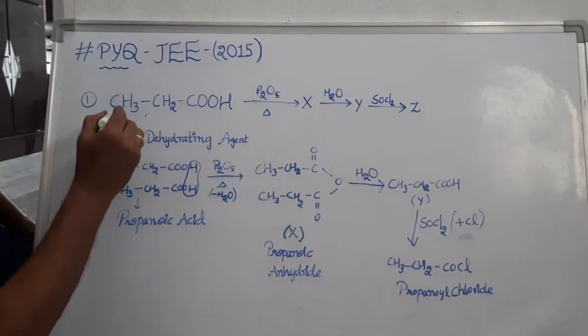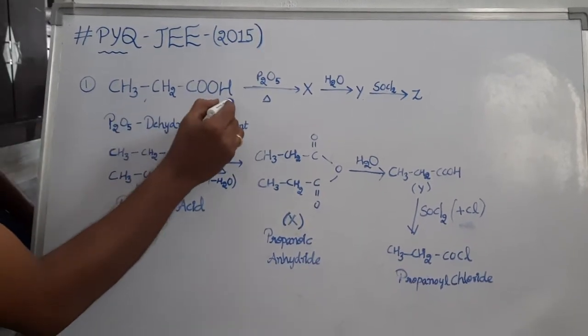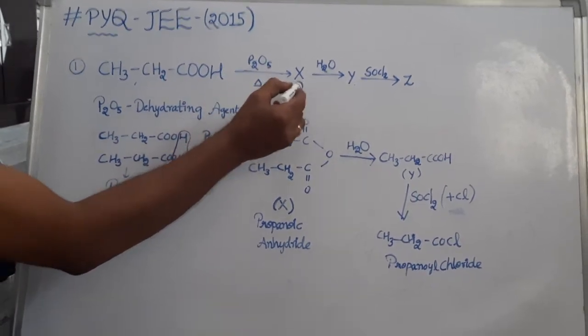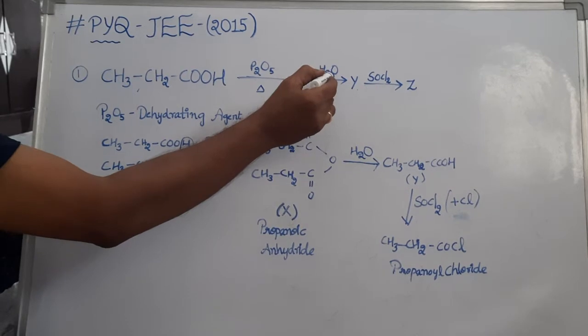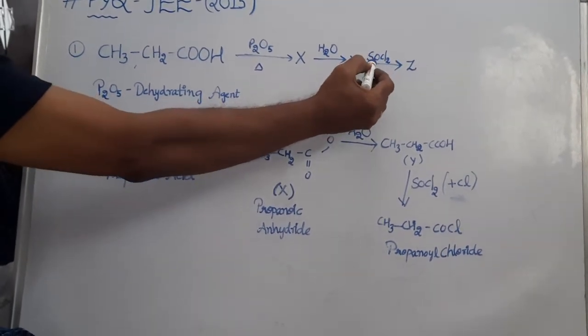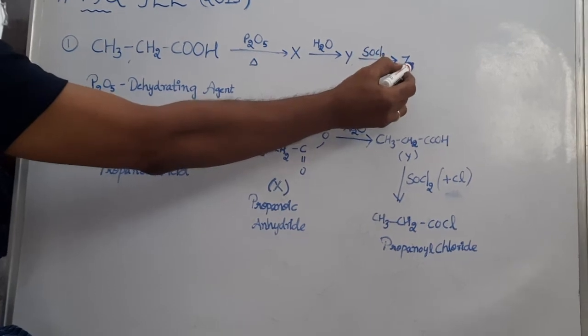Here the question is: propionic acid reacts with P2O5 and on further heating gives compound X, which on further hydrolysis gives compound Y. Y on reacting with SOCl2 gives compound Z.